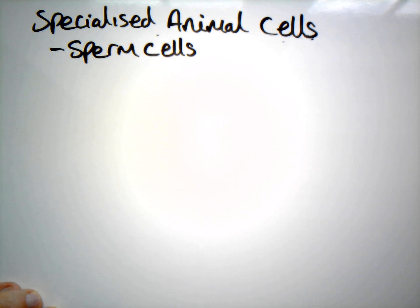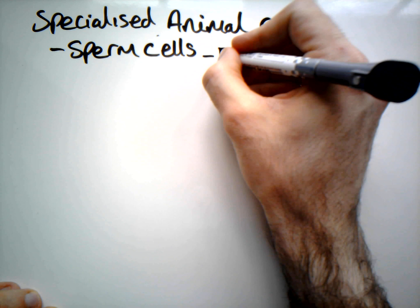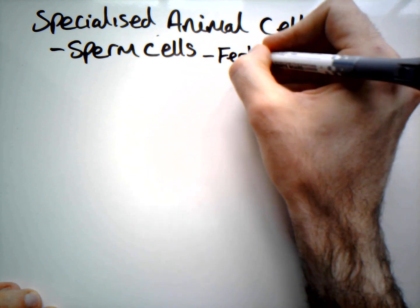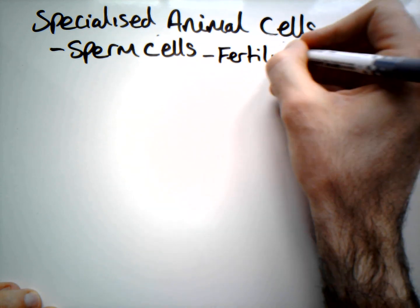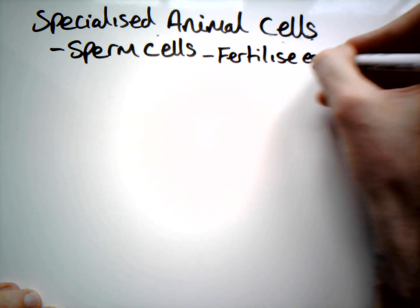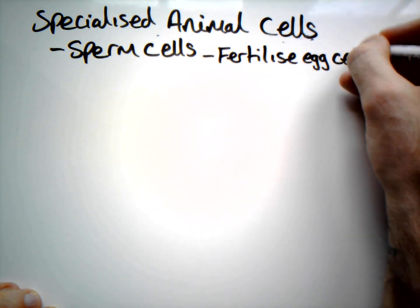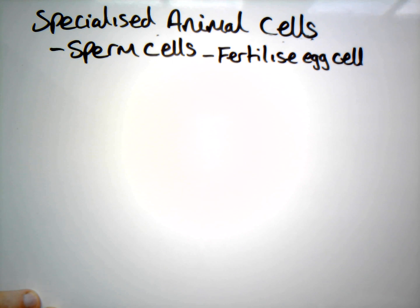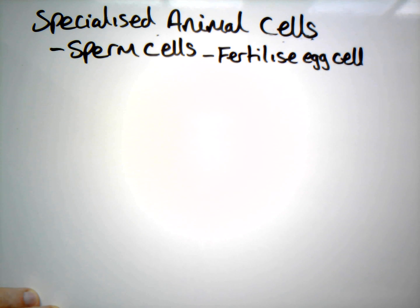Let's talk about a specialized animal cell — the sperm cell. The sperm cell's obvious function is to fertilize the egg cell. To do this, they have a very specialized structure because they need to travel from the opening of the vagina through to the uterus and oviduct, where they will hopefully find an egg cell.